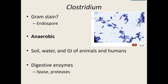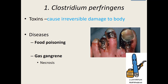Our first Clostridium is Clostridium perfringens, and it's the toxin that causes all the issues — causing irreversible damage to the body. There are two ways to pick it up: you can ingest food that has this bacteria in it, or the bacteria can get into an open wound underneath the skin into that anaerobic environment. If you ingest the bacteria in your food, you get food poisoning — basic cramps and diarrhea generally within about 24 hours. Usually no fever, because it's the toxin causing the issues, not the bacteria itself.